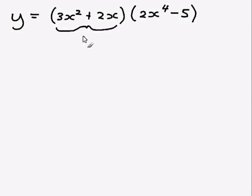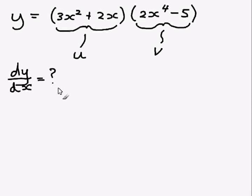So what we can do is label each sub-function with a variable name. So I'm the second sub-function v. Now when we're differentiating y, what we're trying to find out is dy dx. So we don't know this yet, we can use the product rule to help us.